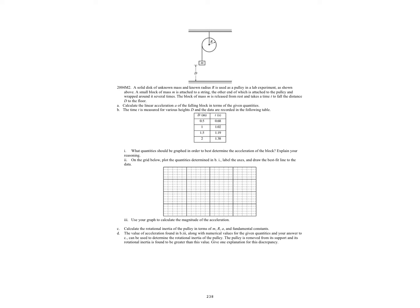How's it going? I'm Anthony Todd. Today I'm going to show you how to do the 2004 M2 problem for your free response, the FRQ, for your AP Physics 1 class. First off, you have a solid disk of unknown mass and a known radius, and it uses a pulley in the lab experiment as shown above. So we have this pulley here.